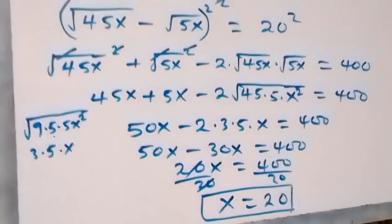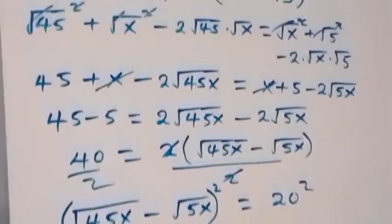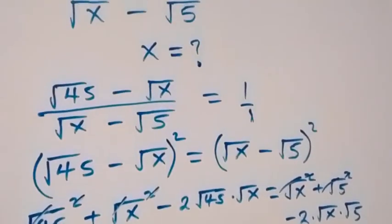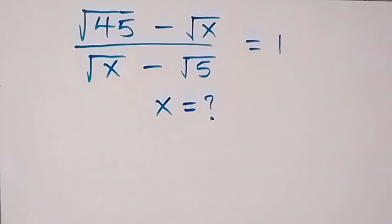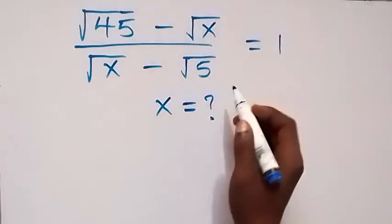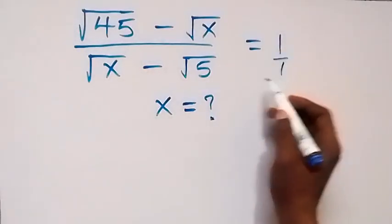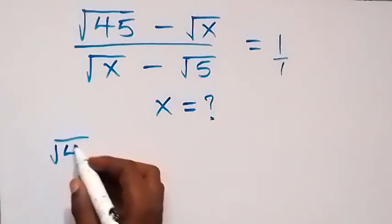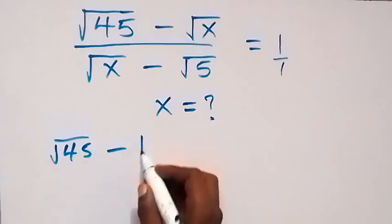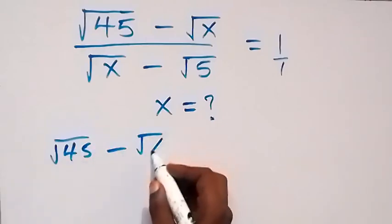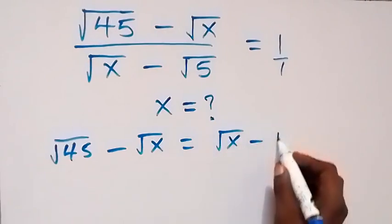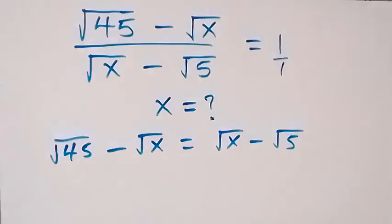Now let's use another method to see another way of solving this. From the cross-multiplied equation, we can also bring x to one side.